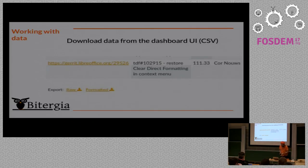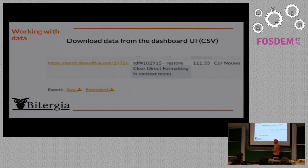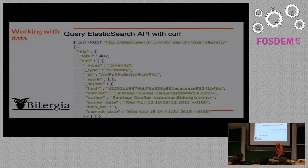Here are three specific examples of how to use the data. The first is very simple: just download the data from the UI itself. In tables you have the option to retrieve all the data in CSV format. CSV can be easily exported to a script or to a spreadsheet like LibreOffice. If you're looking for information like participation by organization or participation by developer, you already have those tables available.